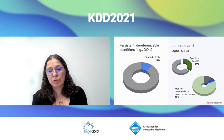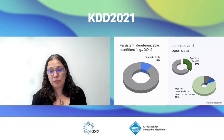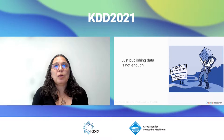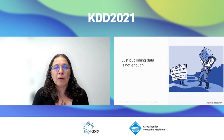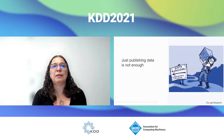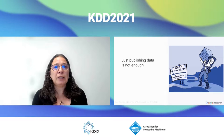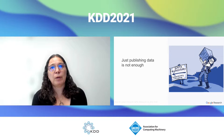We still have two thirds of datasets that don't specify a license, making them essentially not reusable for that reason. But a third do — constituting millions and millions of datasets. Of those 34% that do specify a license, the vast majority — 82% — are actually free for commercial or non-commercial use. So it is truly open data. With that, I want to go back from our experience in Dataset Search and think about the ecosystem and where this leaves us.